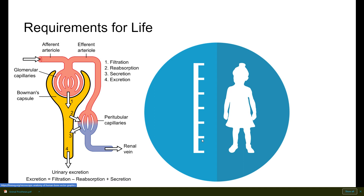Next is growth and development — growth having to do with gaining size, and development having to do with actually changing form. And then lastly is reproduction. Reproduction is necessary for the survival of a species — you would not be here without it, and future generations would not exist without it.